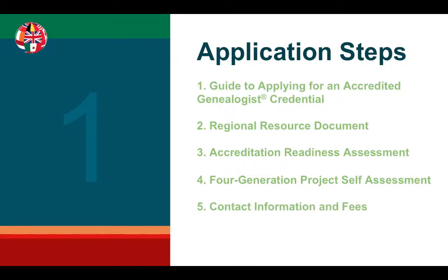Fifth, fill out the contact information form and pay the fees. The contact information form is used to gather information needed to process fees and assign an application number. Once the contact information form is submitted, you will receive an email with instructions on how to submit your four-generation project electronically.